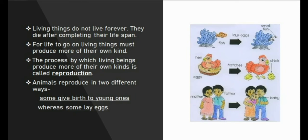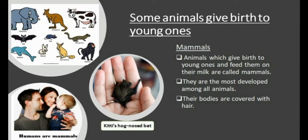As you can see in the figure, animals reproduce in two different ways — some give birth to young ones, and some lay eggs. First, we will learn about animals that give birth to young ones.